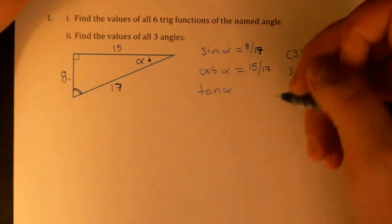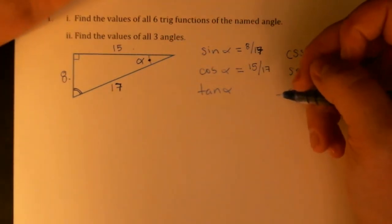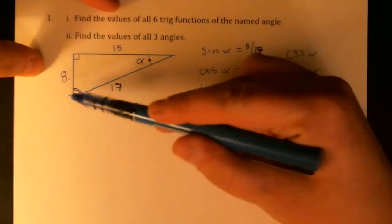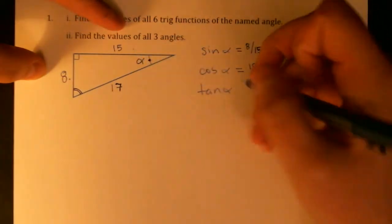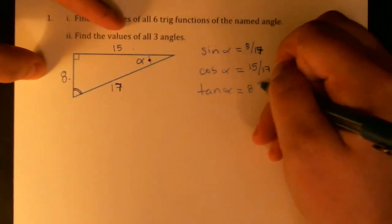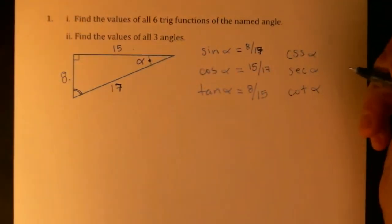And then the last one I want is tangent of alpha. So tangent of alpha is opposite over adjacent, which is 8 over 15, the one I tried to write down the first time.